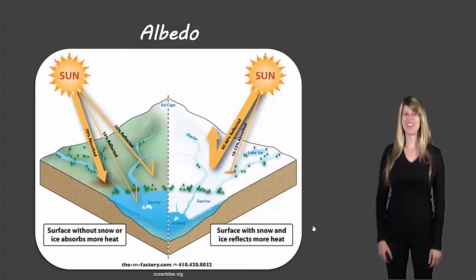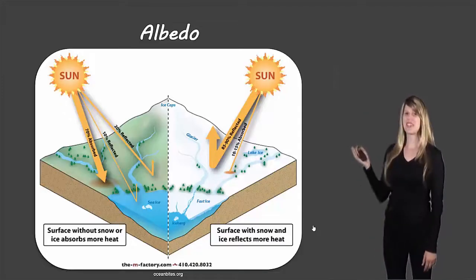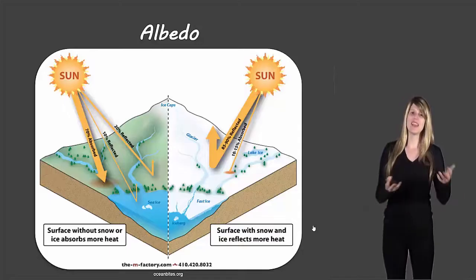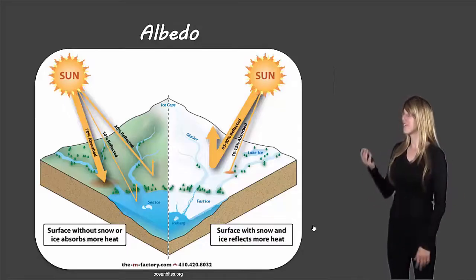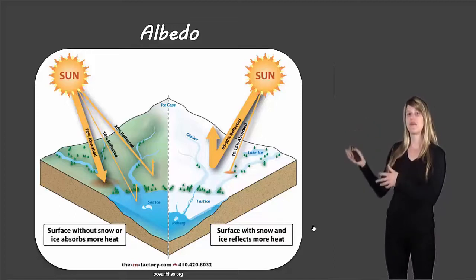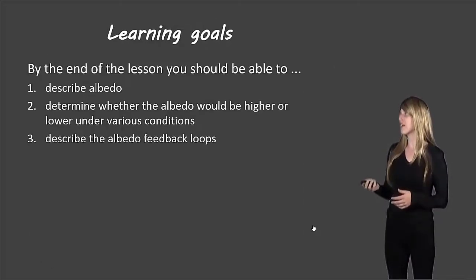Hello students, Ms. Swanson here. Today we're going to learn all about albedo. I chose this picture because it shows albedo in a nutshell and includes some things we need to consider in this unit on climate change. You can see from the picture that albedo has to do with either sunlight being absorbed or reflected by different types of surfaces.